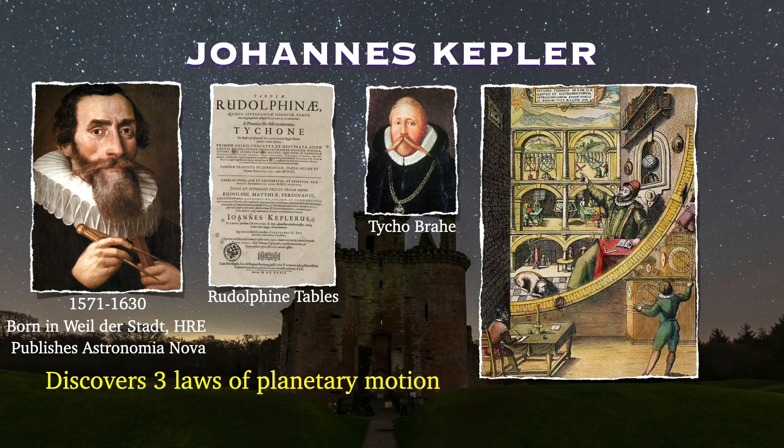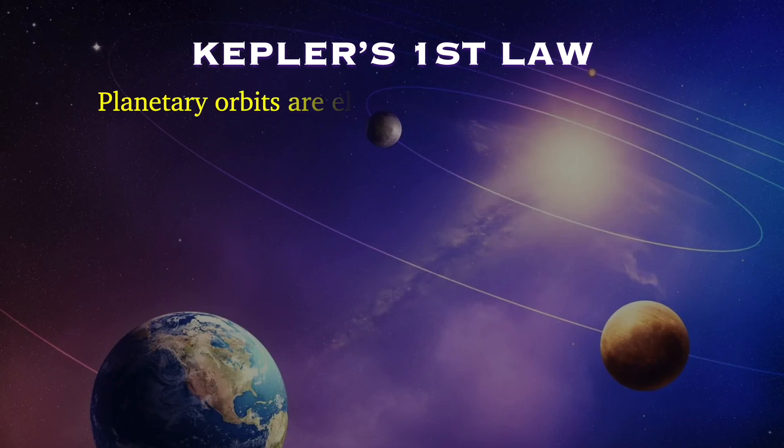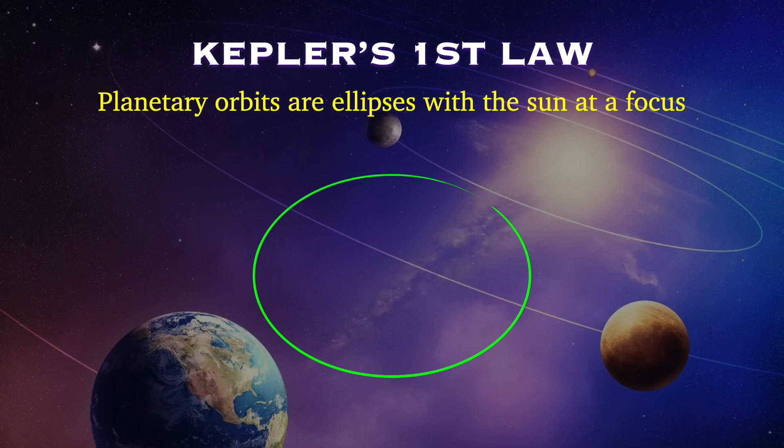Let's now go through these laws one at a time. The first law states that planetary orbits are ellipses with the sun at a focus. So what does this mean? We first have to clarify what exactly is an ellipse. An ellipse is a curve that kind of looks like an oval, but it has some specific properties. It has two axes, a major axis and a minor axis, whose lengths are given as 2a and 2b.